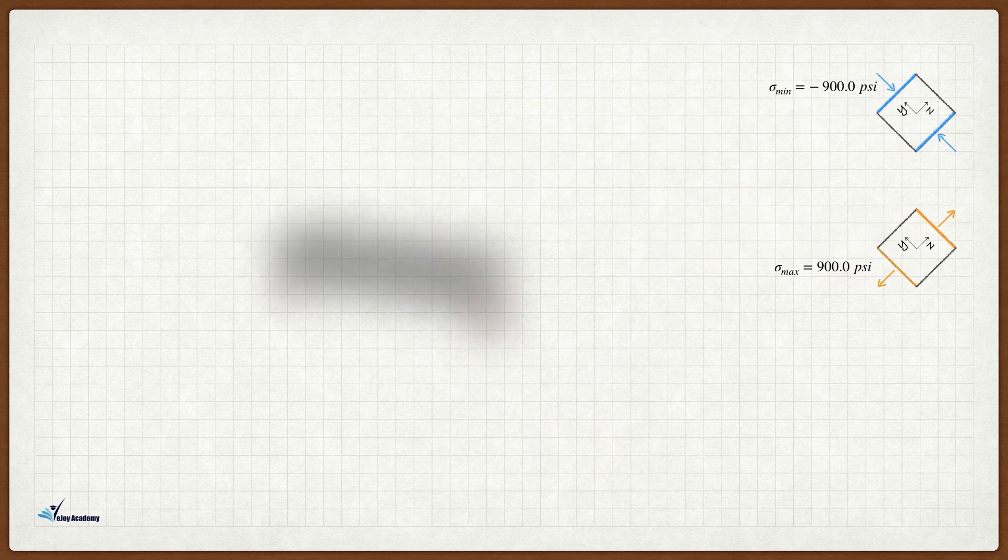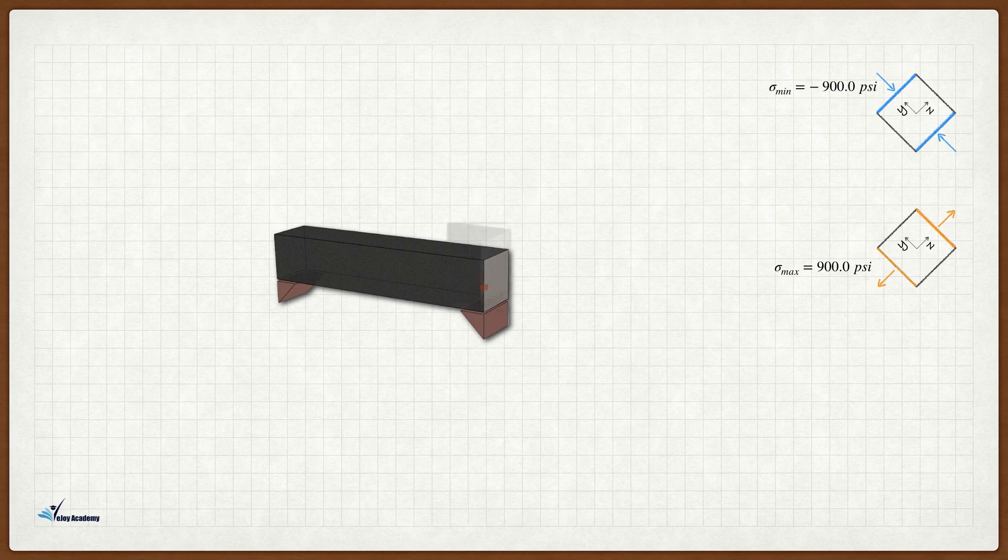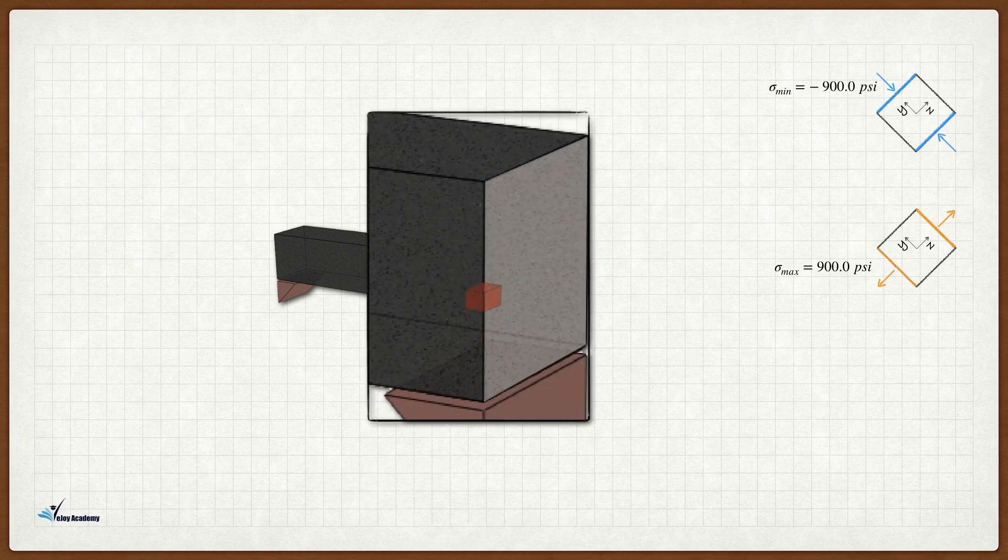Now that we obtained the principal stresses, let's get back to the concrete beam and map the transform stresses onto the cross section.